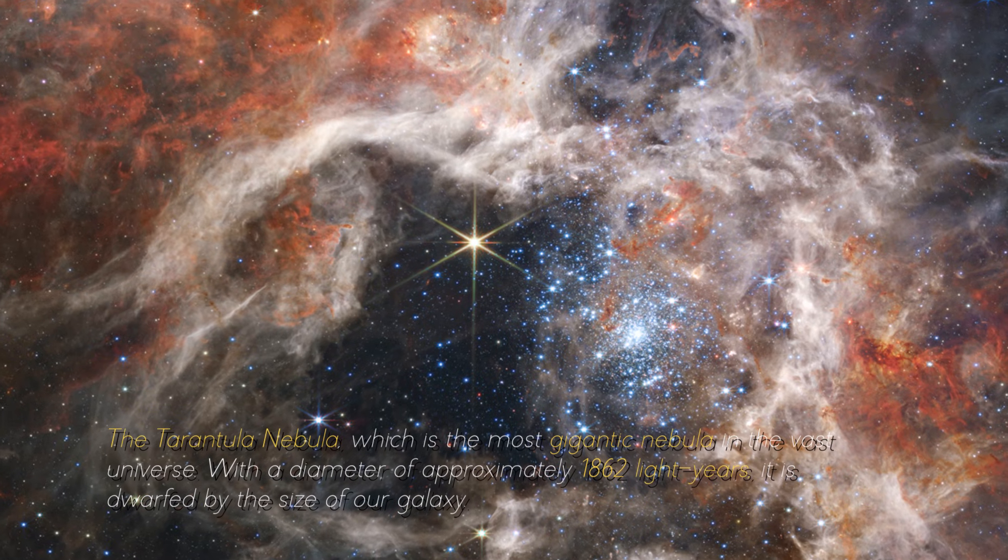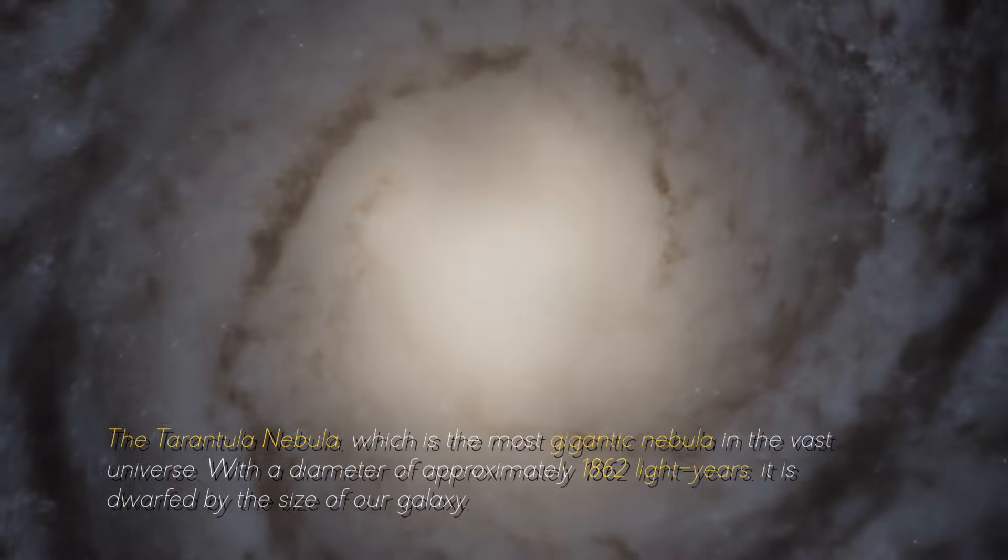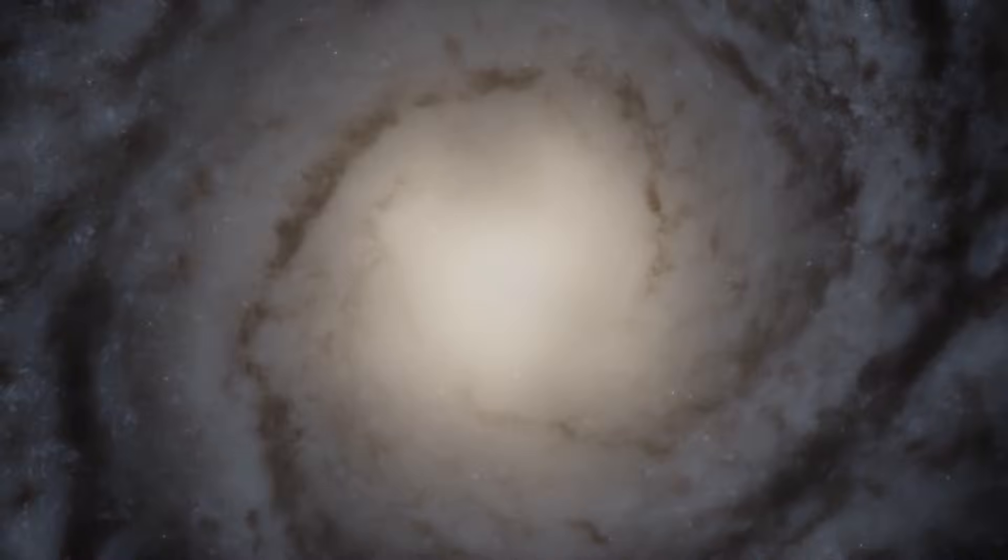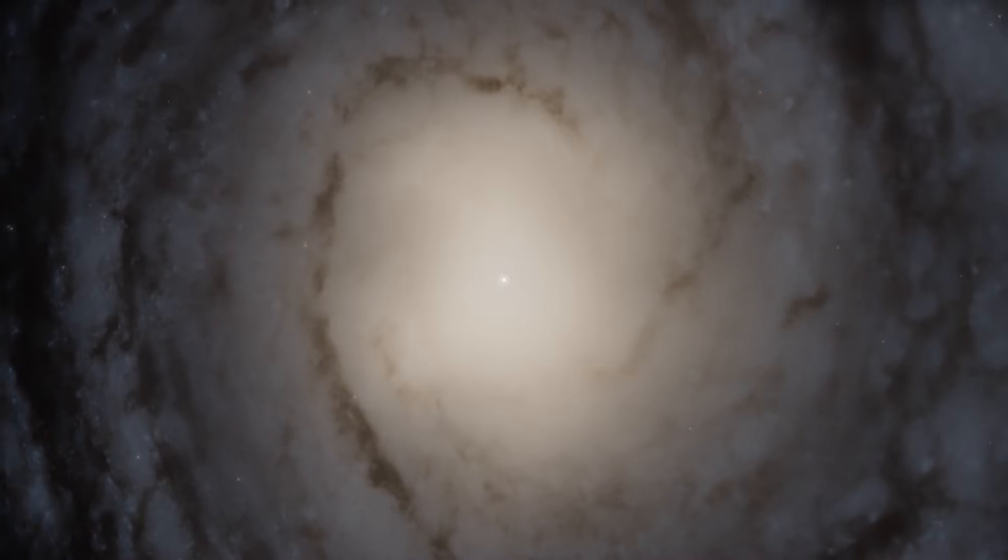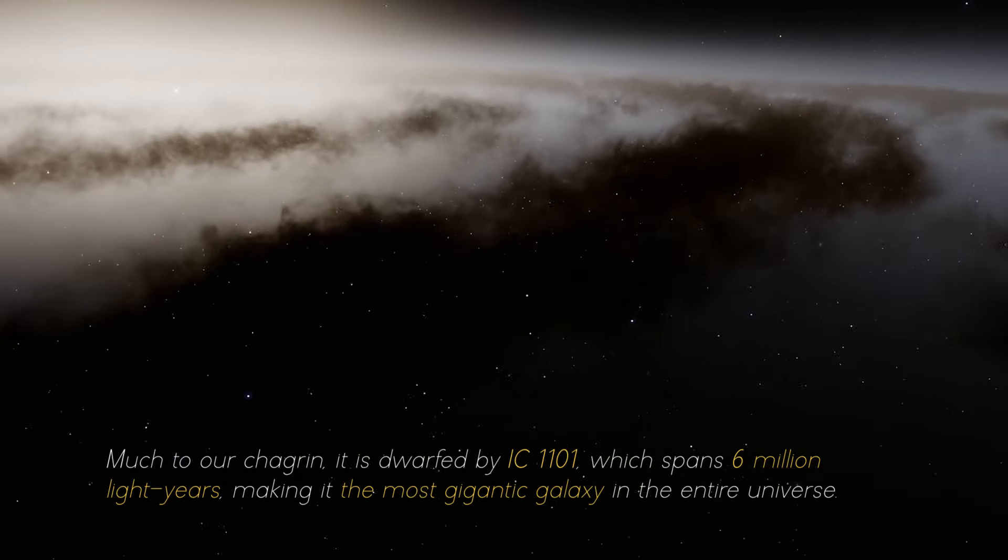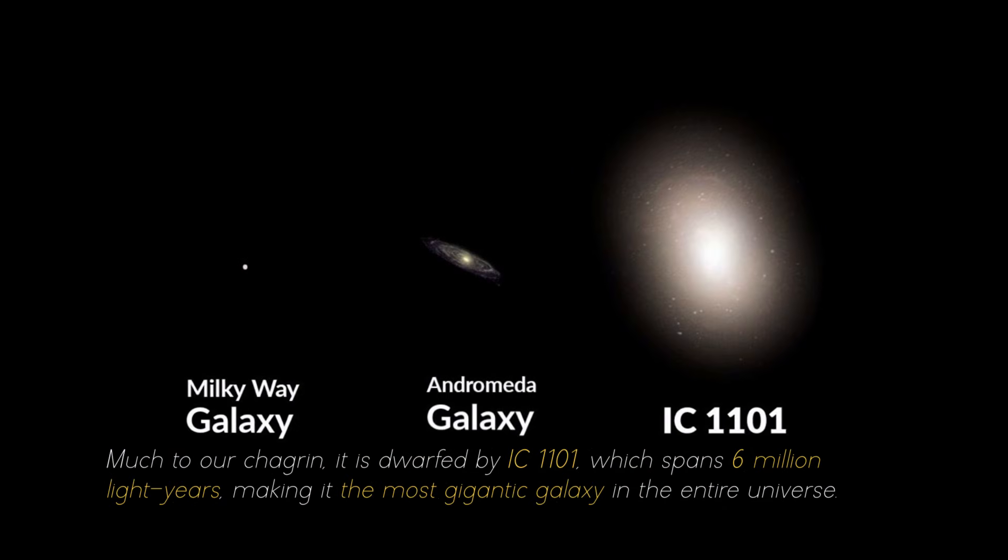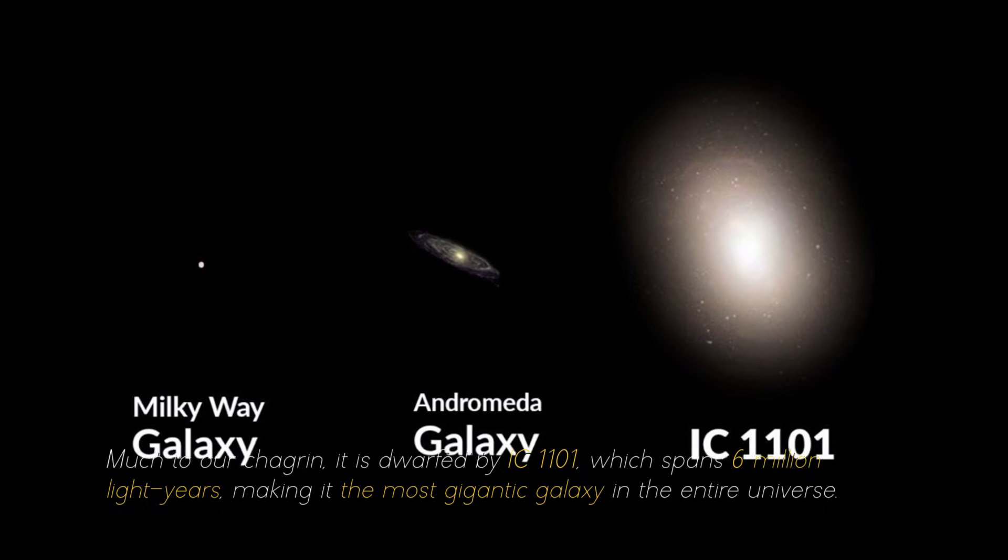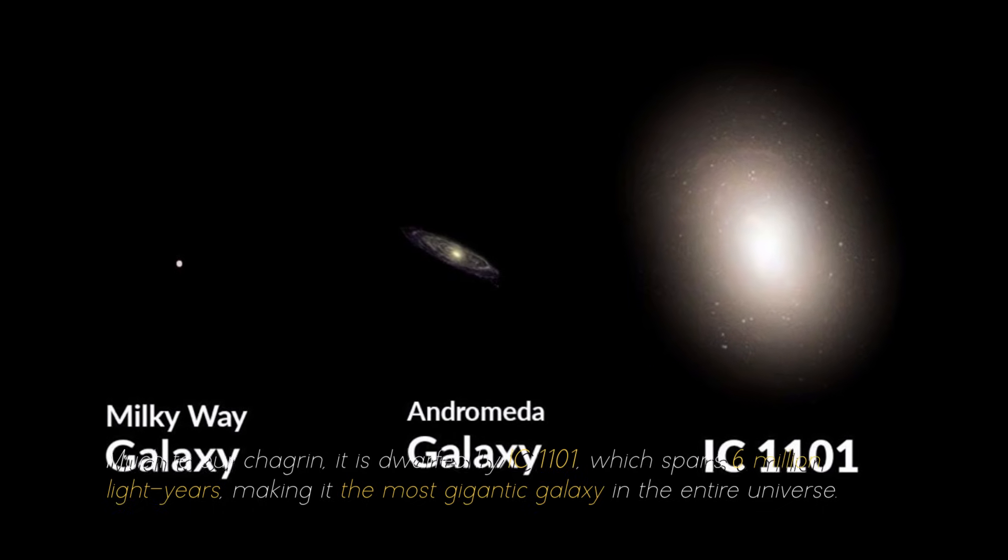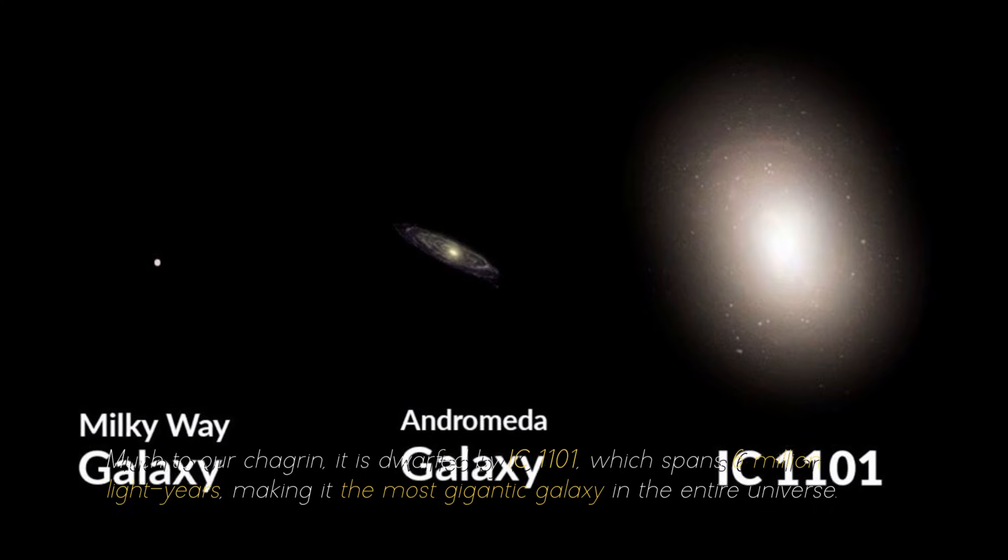It is dwarfed by the size of our galaxy, which spans some 105,700 light years. Much to our chart range, it is dwarfed by the IC 1101, which spans 6 million light years, making it the most gigantic galaxy in the entire universe.